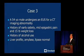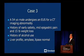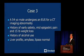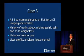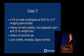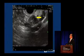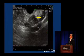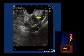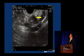Case 3: a 53-year-old male undergoes endoscopic ultrasound for a CT imaging abnormality. He has a history of early satiety, mid-epigastric pain, and a 15-pound weight loss, with a past history of alcohol use. The liver profile, amylase, and lipase are normal. Here is the lesion — this is the pancreas, this is the pancreatic duct, splenic artery, splenic vein. This is a picture of the pancreatic body.